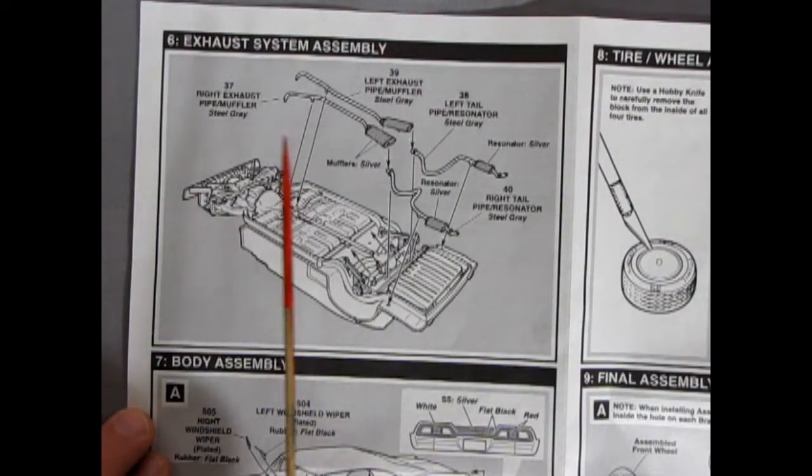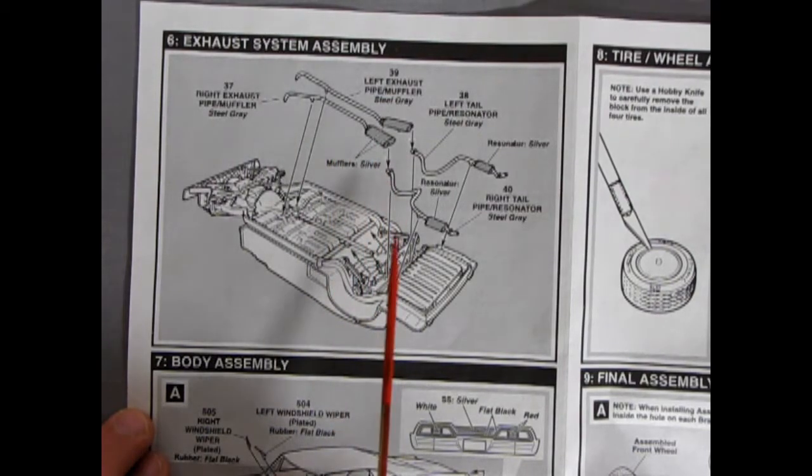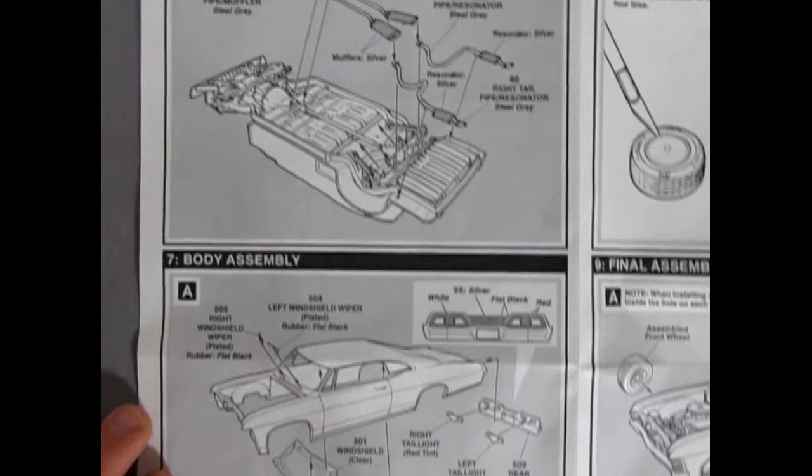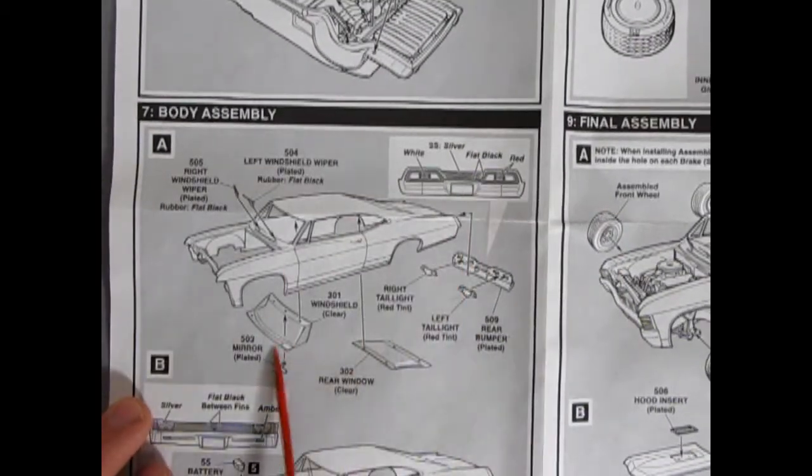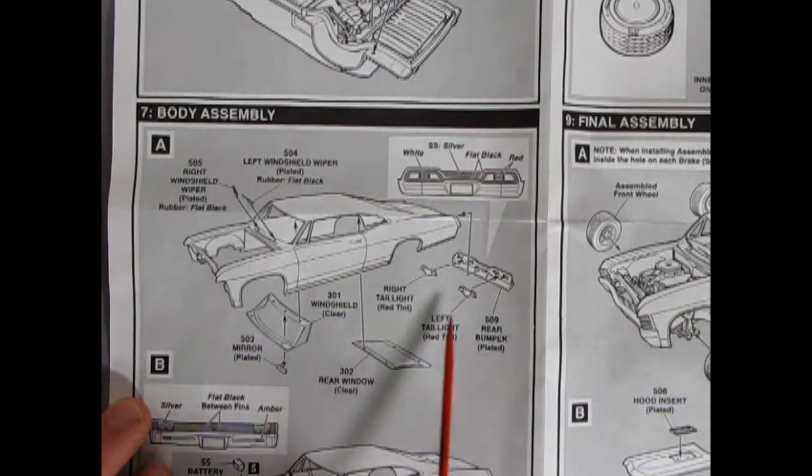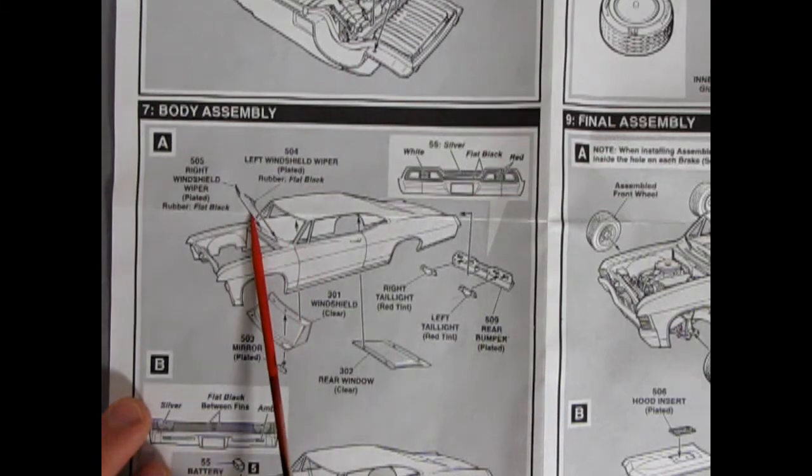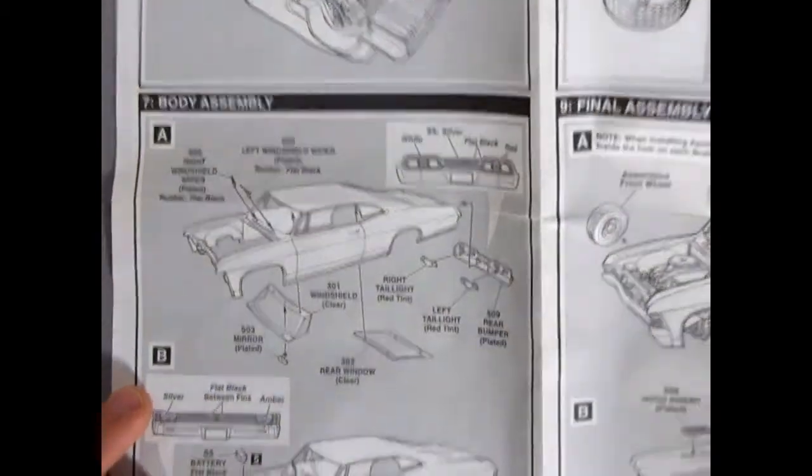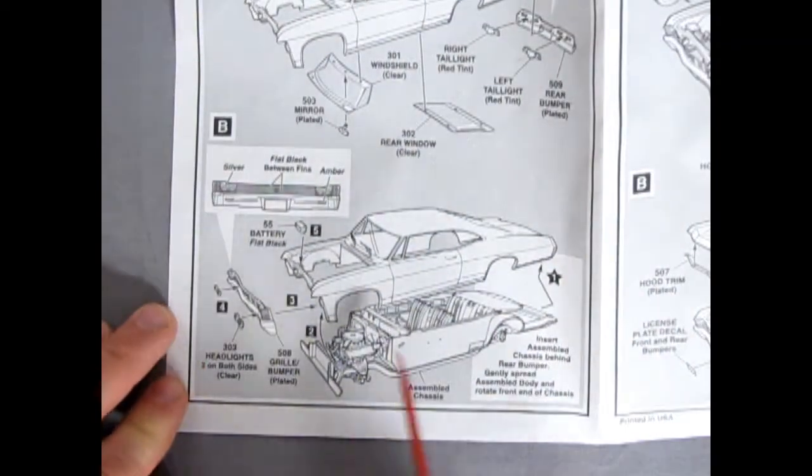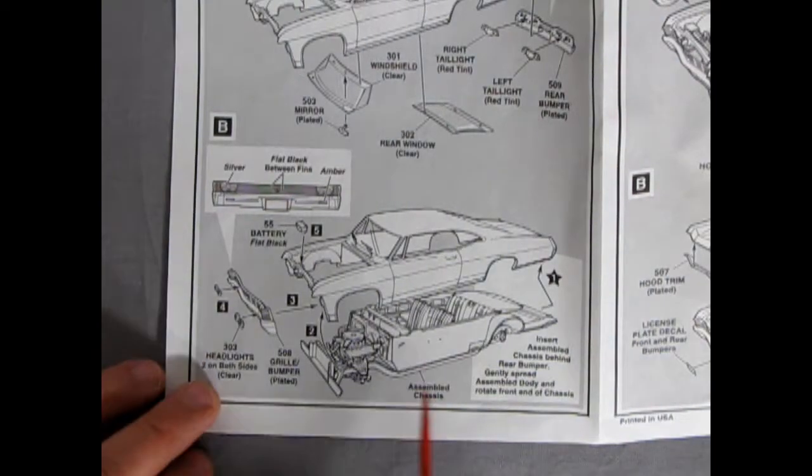Our next panel shows the exhaust system assembly, left and right exhaust pipes. There are two pieces. And then we get our body assembly going on here with the glass in your mirror, the rear taillights popping through this nice chrome bumper in the back as well as windshield wipers, which is always nice.